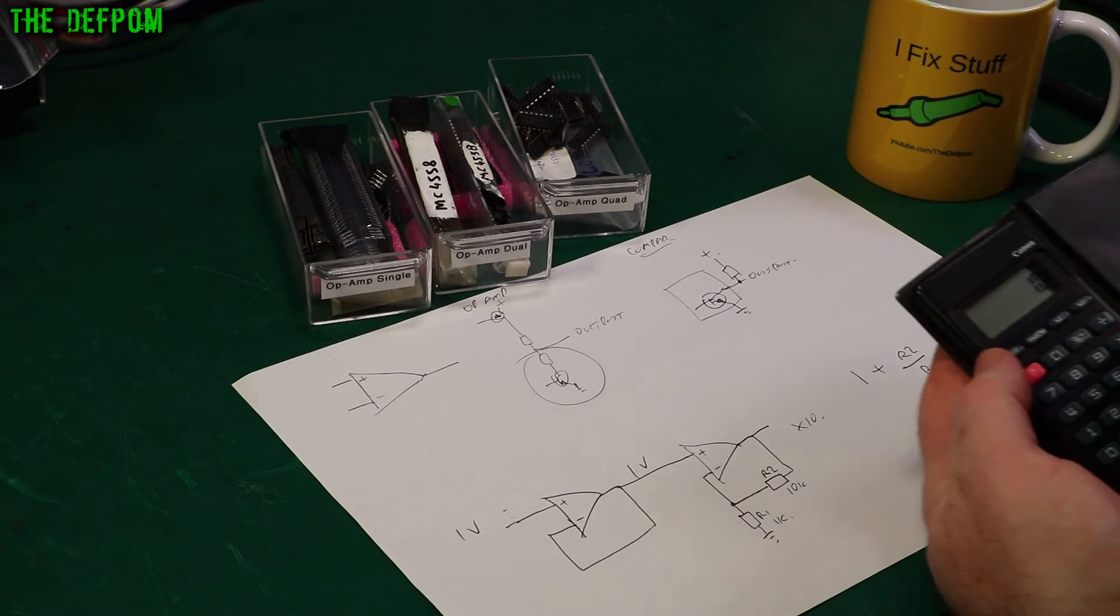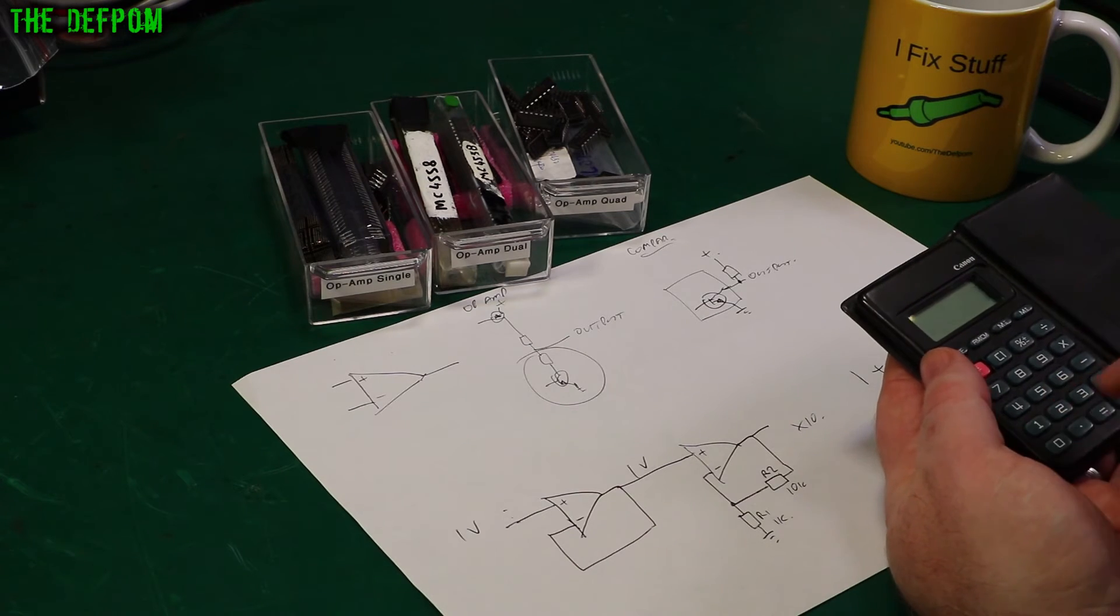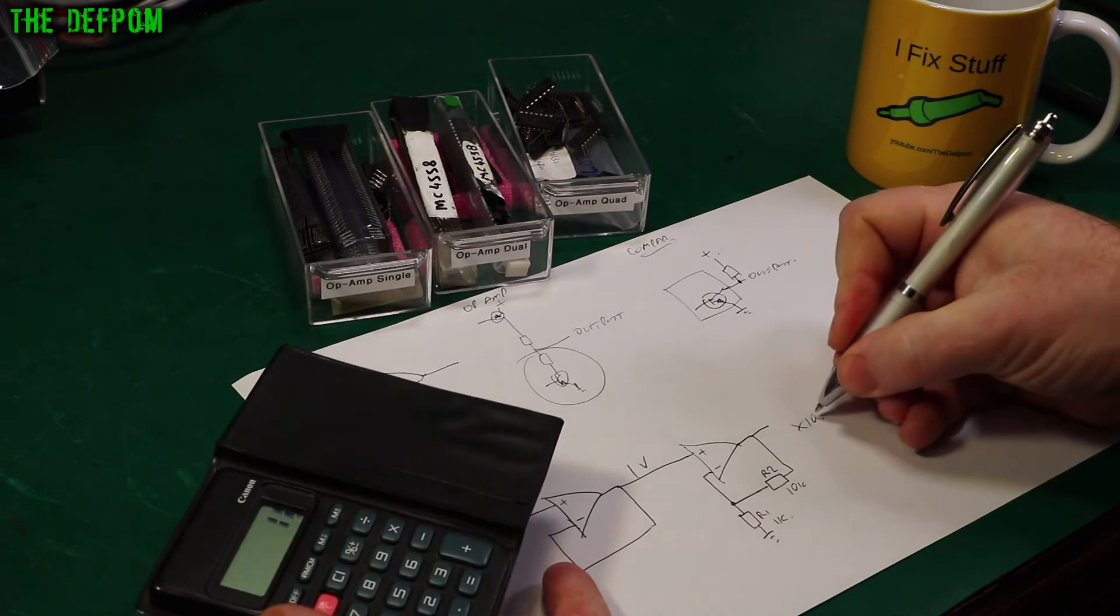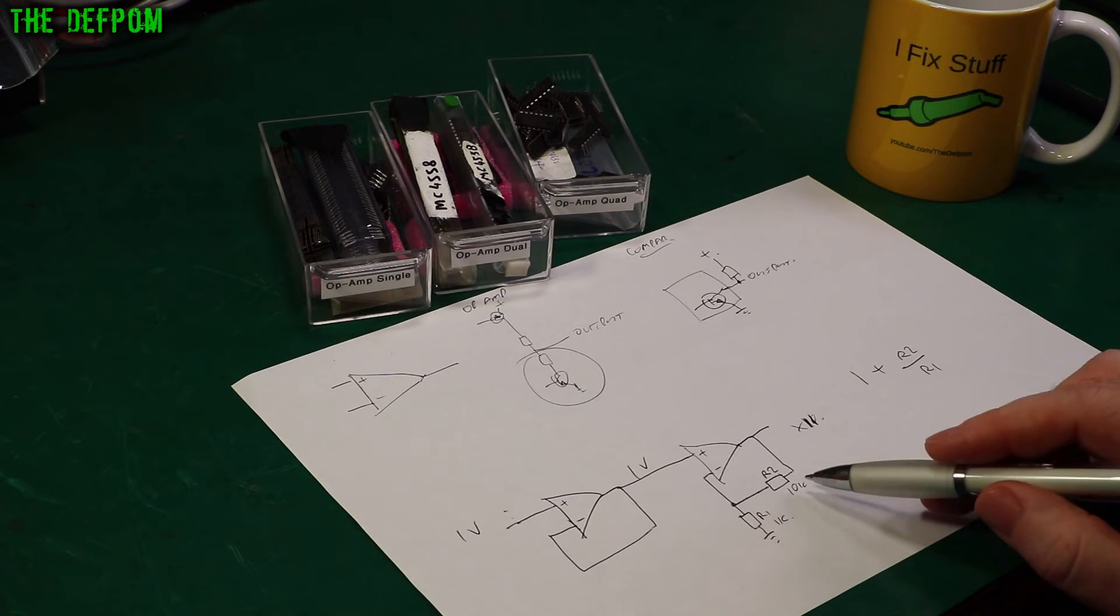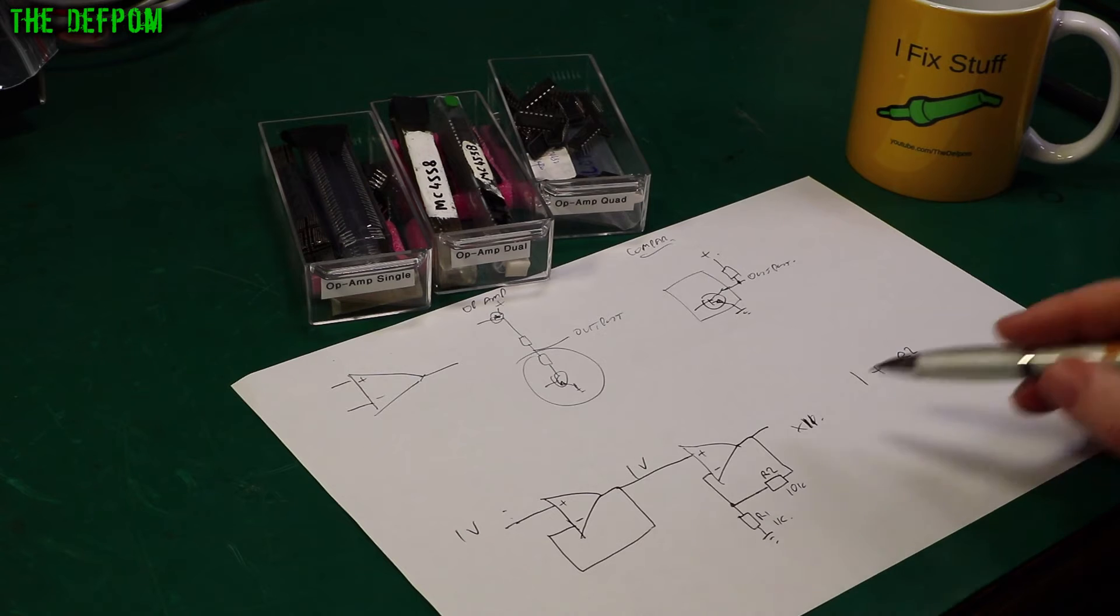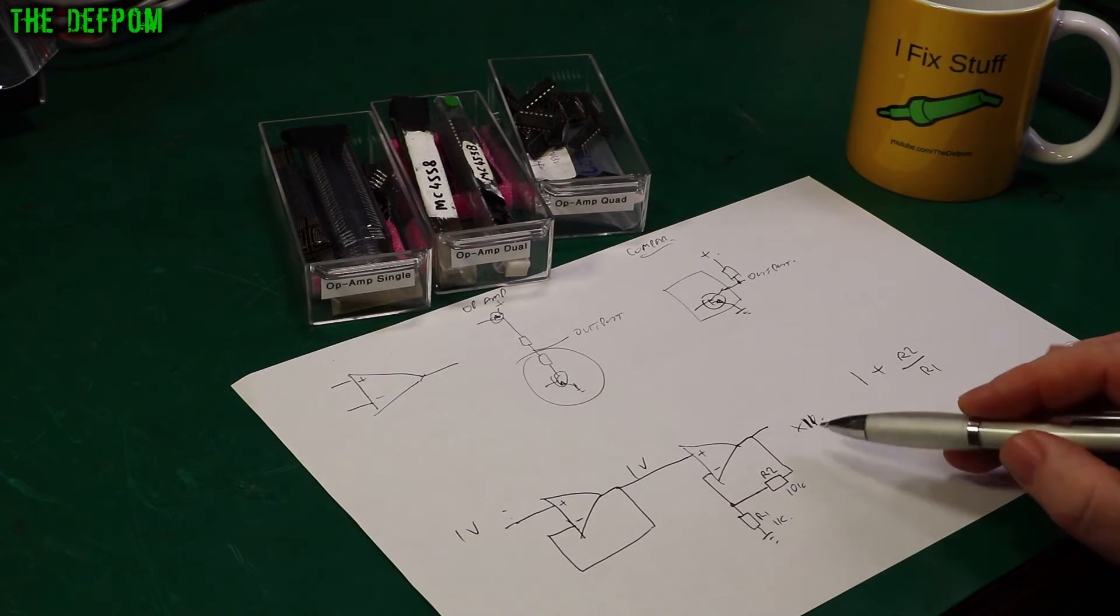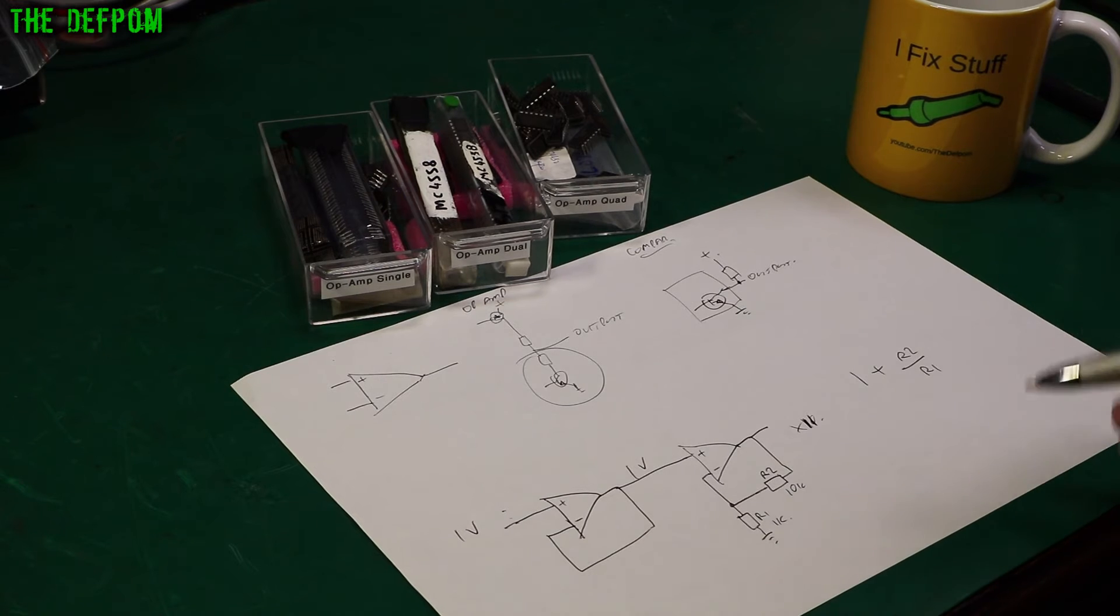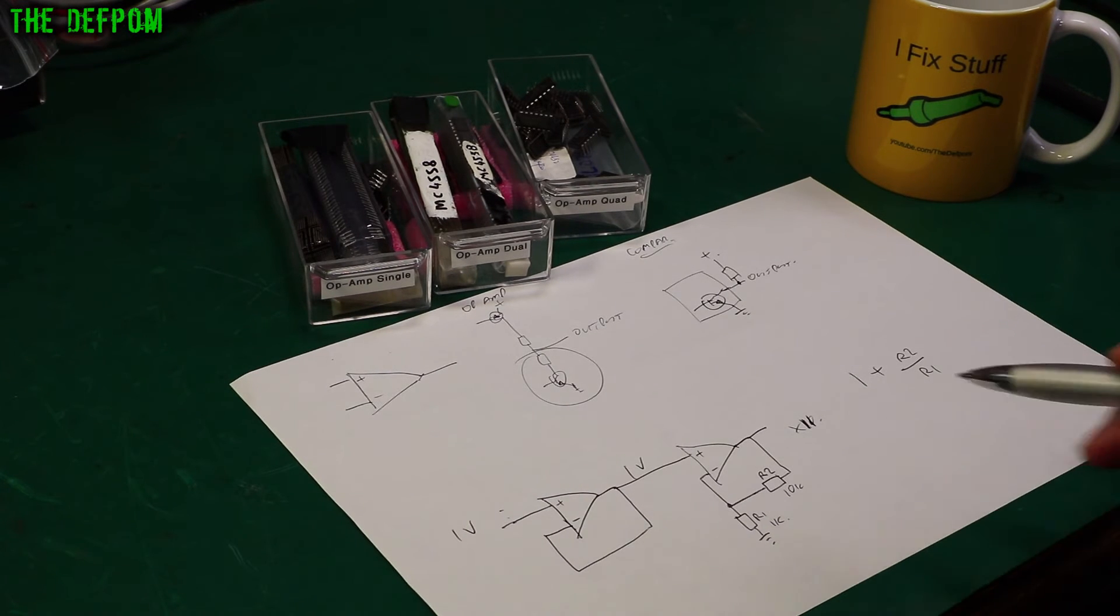R2 is 10k divided by 1k plus 1, that's going to give us 11 times gain. It's actually times 11 with those values which you might not want. So if you wanted an actual times 10 gain you need to change these resistor values very slightly. You'd want a 10k resistor here and a 1.1k resistor here.